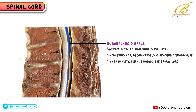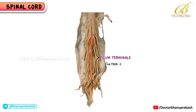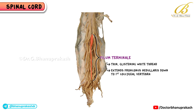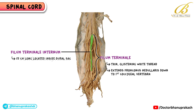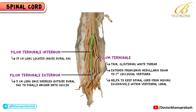This CSF is vital for cushioning the spinal cord. Continuing with the filum terminale, it's a thin, glistening white thread that extends from the conus medullaris down to the first coccygeal vertebra, Co1. It has two parts: the filum terminale internum, about 15 cm long, located inside the dural sac; and the filum terminale externum, about 5 cm long, which emerges outside the dural sac to finally anchor onto the coccyx. The filum terminale helps keep the spinal cord from moving excessively within the vertebral canal.